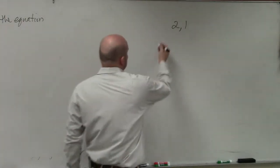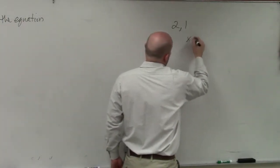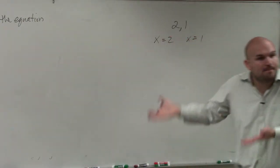The first thing we want to do is set these both equal to 0. So we say x equals 2 and x equals 1, right? I'm working my way backwards.